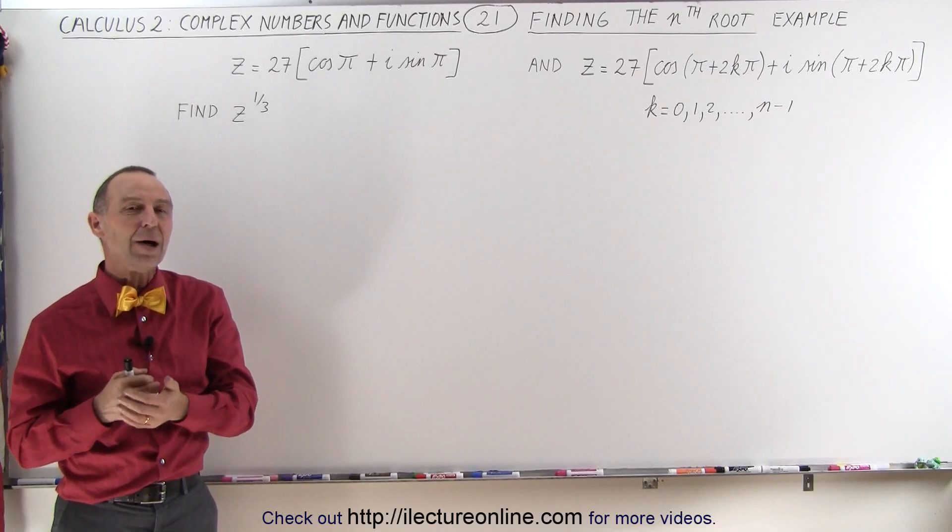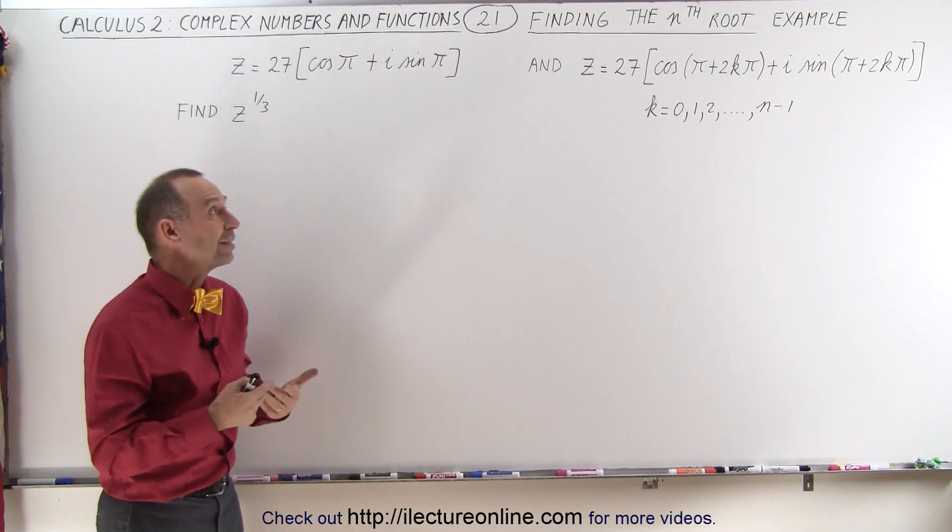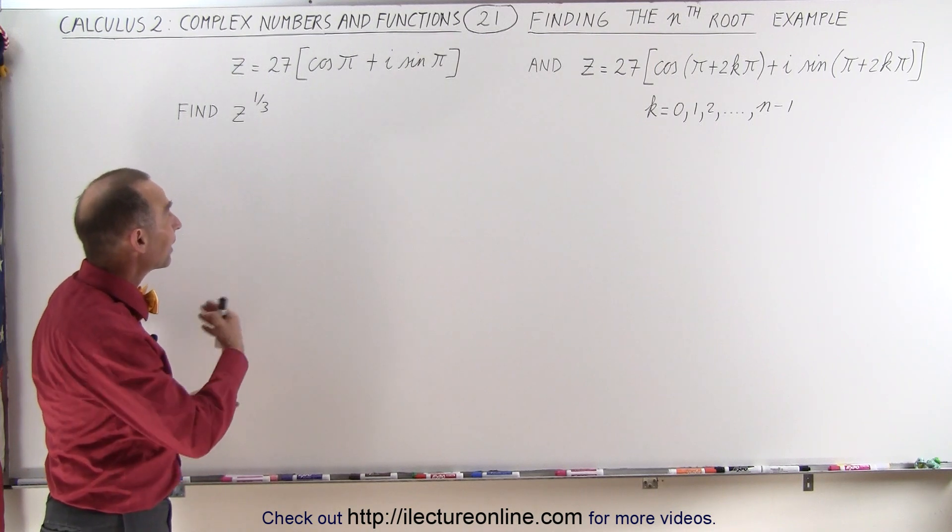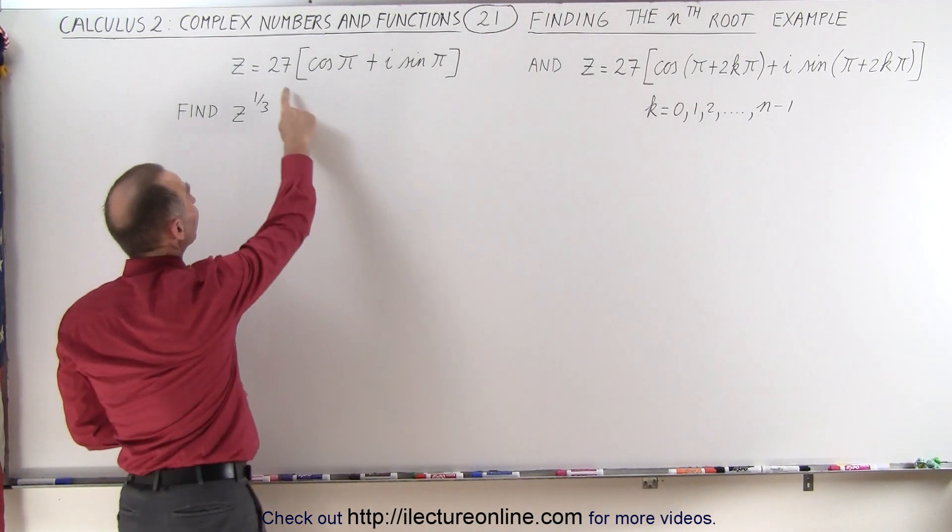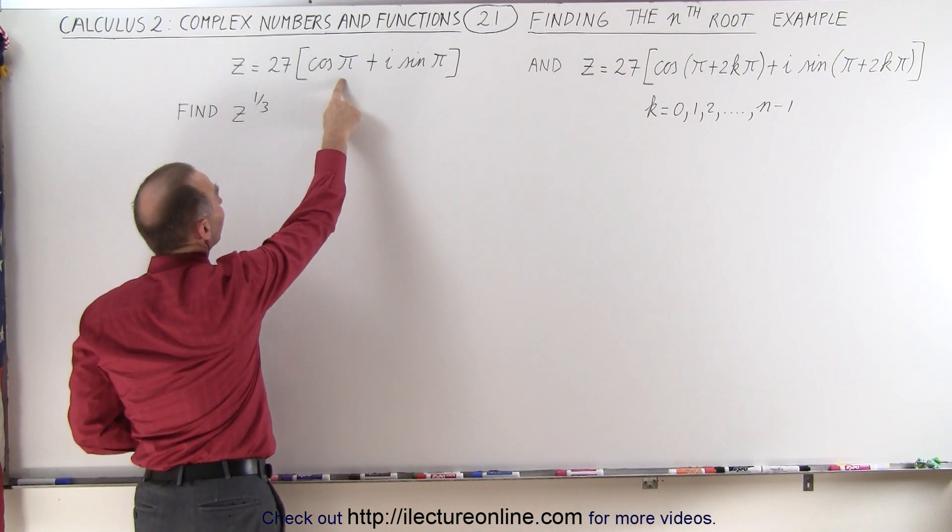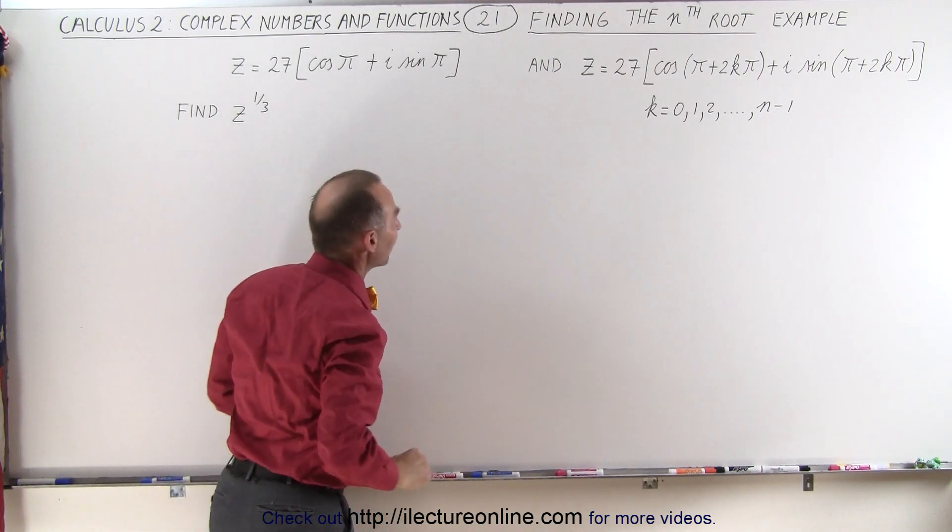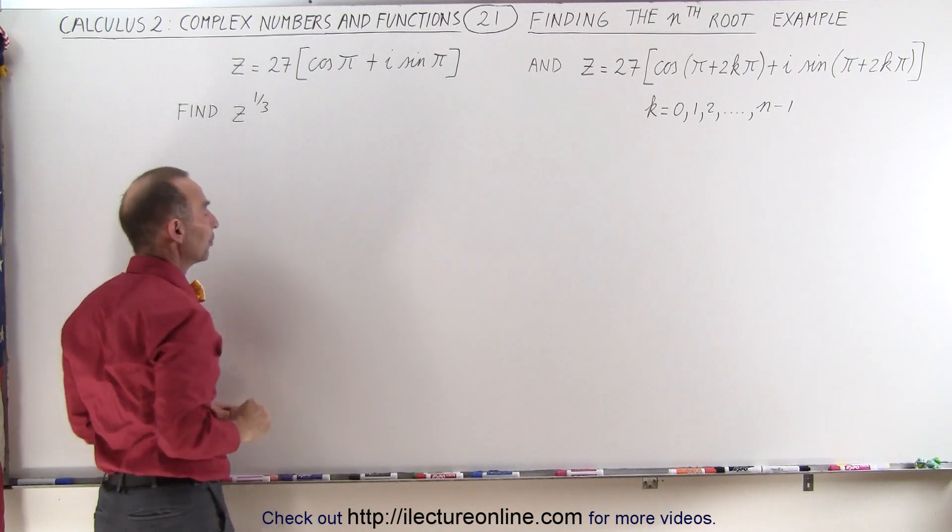Welcome to ElectronLine. Now we're going to show you an example of how to take the nth root of a complex number in polar form. In specific, the number is 27 times the cosine of π plus i times the sine of π, and we're going to take the third root.